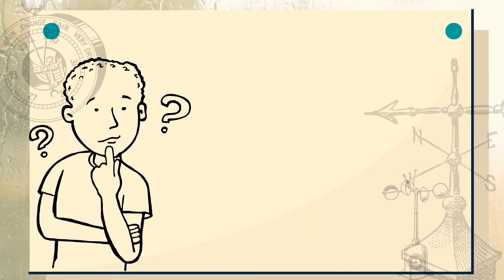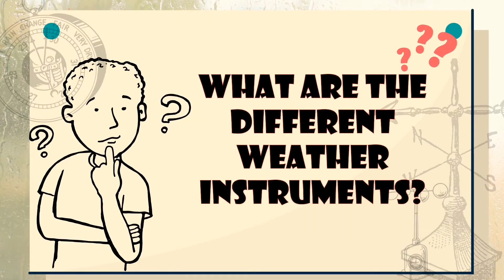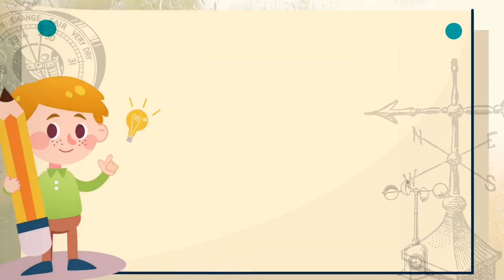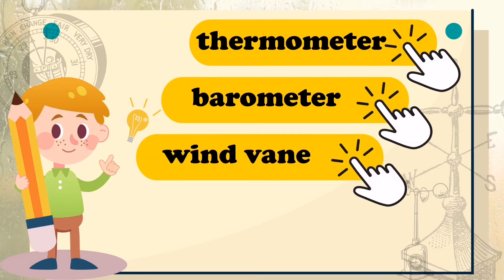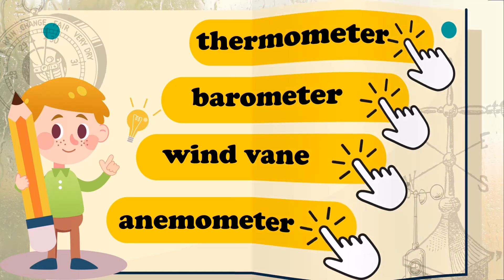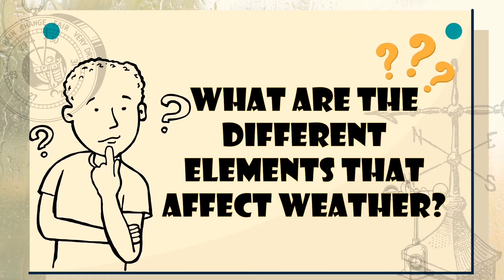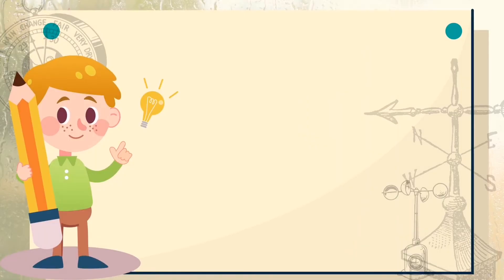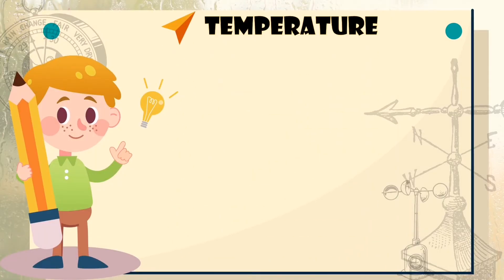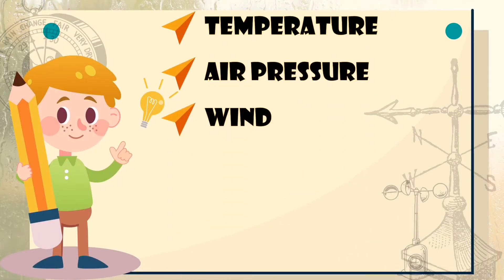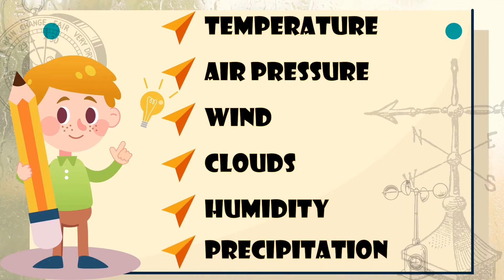So again, what are the different weather instruments? First, we have the thermometer, barometer, wind vane, and anemometer. And what are the different elements that affect weather? First, we have temperature, air pressure, wind, clouds, humidity, and precipitation.